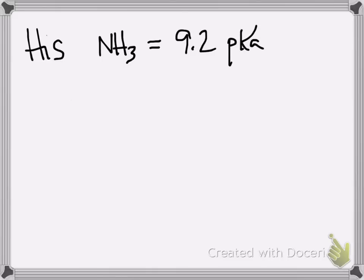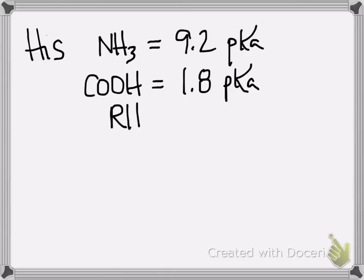So the example I'll use today is histidine. It's got three pKa's. The alpha amino group has a pKa of 9.2. The carboxyl group has a pKa of 1.8. And the R group, which we know because we know the structures, has a positive charge when it's protonated, has a 6.0 pKa. The pKa's are something you'd be given on the exam. No need to memorize those.